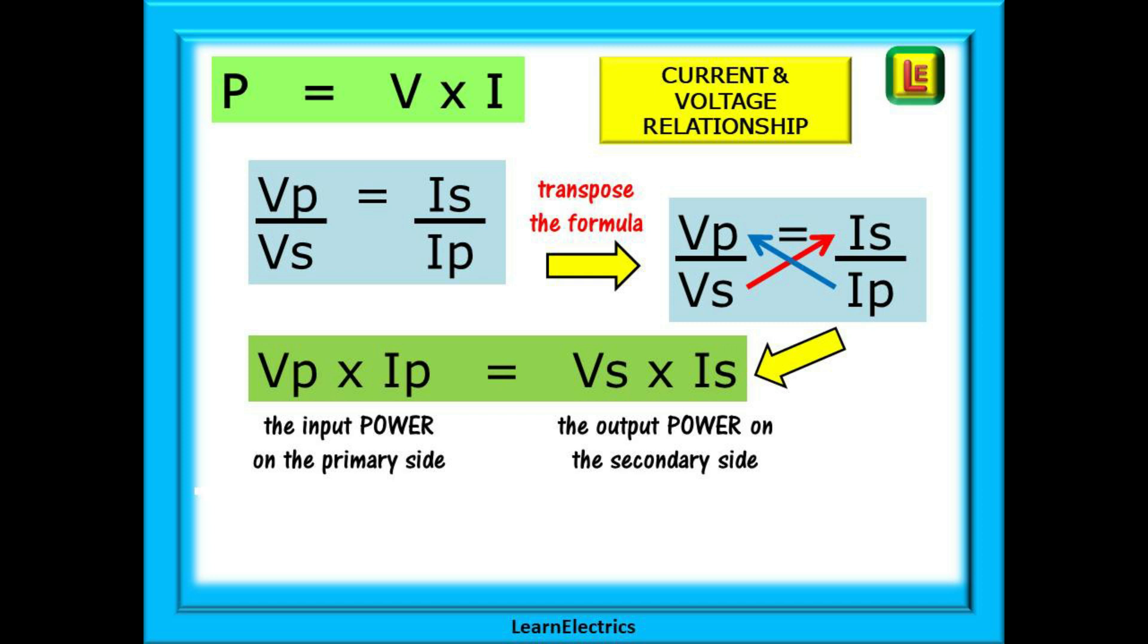We can move Vs from the bottom left to the top right, and we can move Ip from the bottom right to the top left. This leaves us with a rearrangement of Vp times Ip equals Vs times Is. We have just said that V times I is power. So this formula now shows us that the input power on the primary side is equal to the output power on the secondary side.